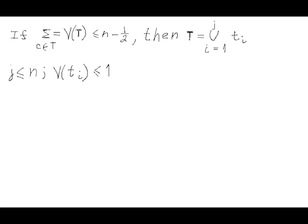The statement in this more general form is written on the diagram. If a set of coins T has total value not greater than n minus 1/2, then this set T can be partitioned into j partial sets t_i, so that j is not greater than n and the value of each partial set t_i is not greater than 1.